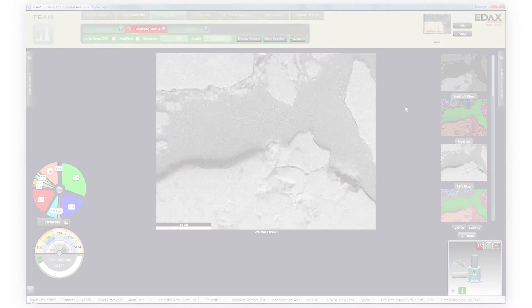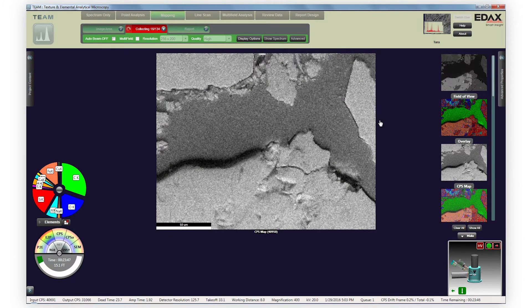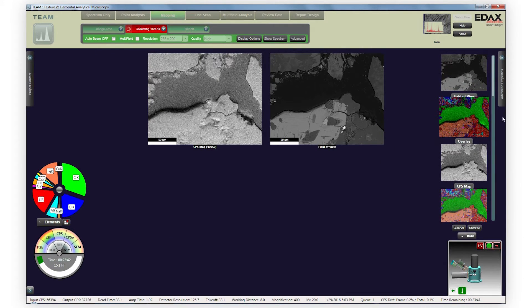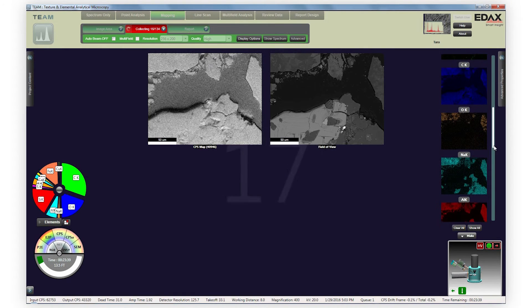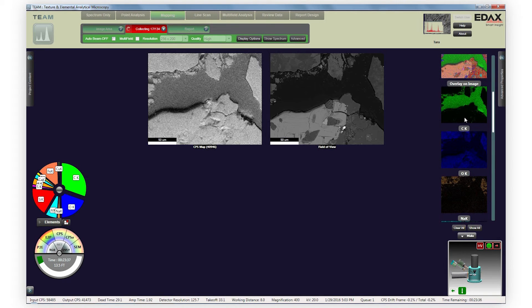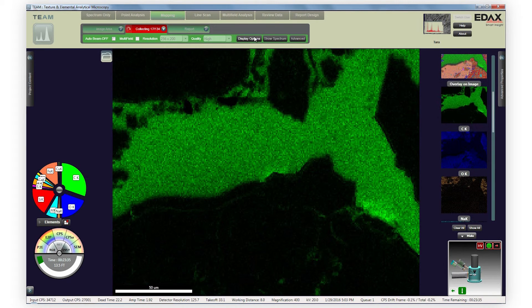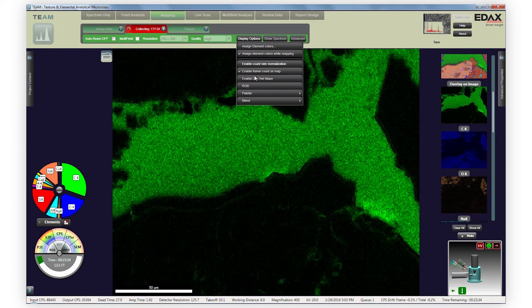CPS maps provide a unique X-ray image of the sampling area which highlights variations in count intensity due to topography and ionization differences. These variations are also used to correct for any false intensity variations due to these factors.